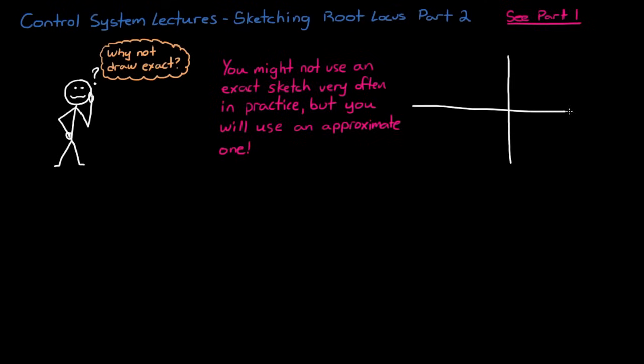With just a little bit of practice, you'll be able to look at just the open-loop poles and zeros of the system, and then be able to visualize what the root locus would look like for the closed-loop system without doing any math at all.